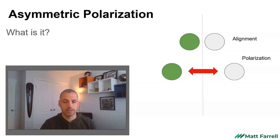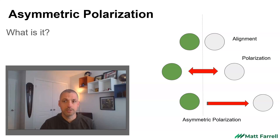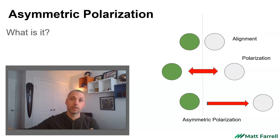However, asymmetric polarization implies that one of the groups — the green dot — is staying where they were, but the polarization is driven by the other dot, the gray dot, getting further apart. So it's not a matter of both groups getting further apart; it's one group staying the same and the other group getting more extreme. That is asymmetric polarization.